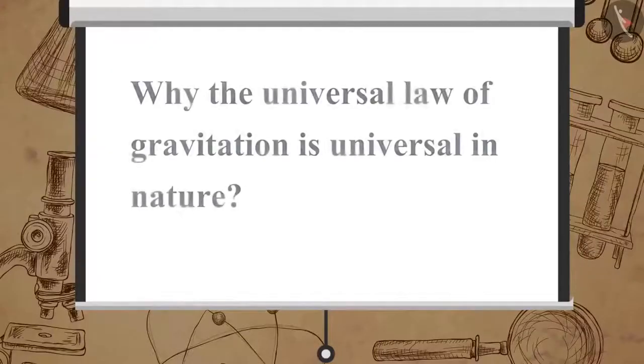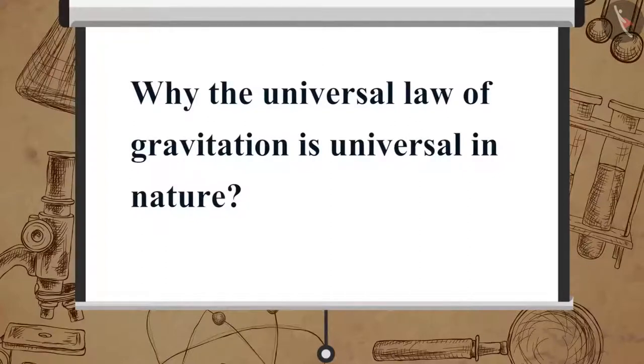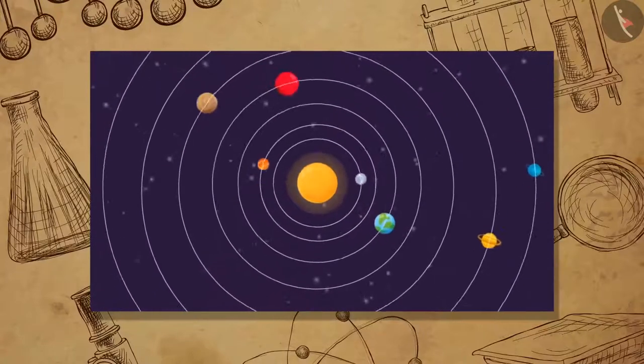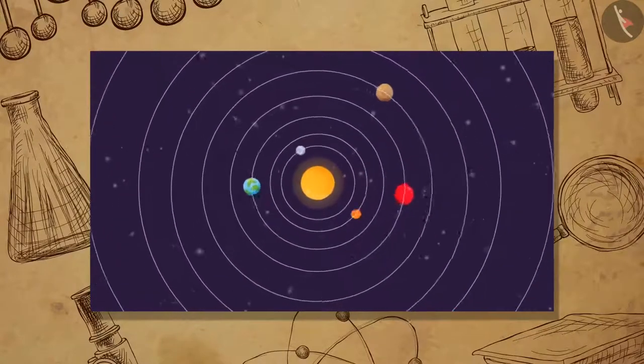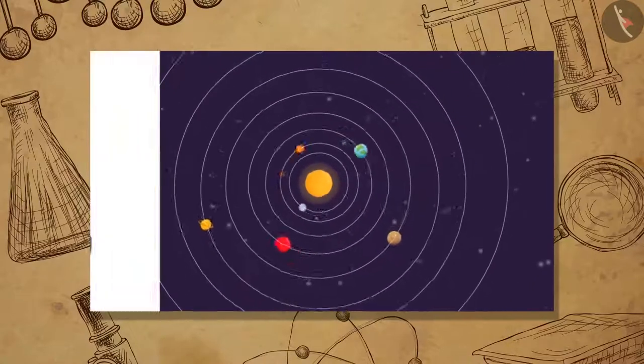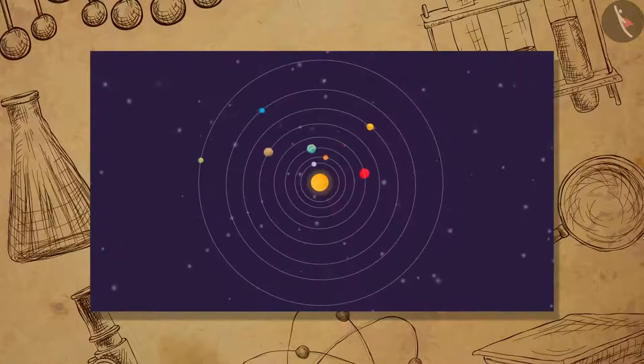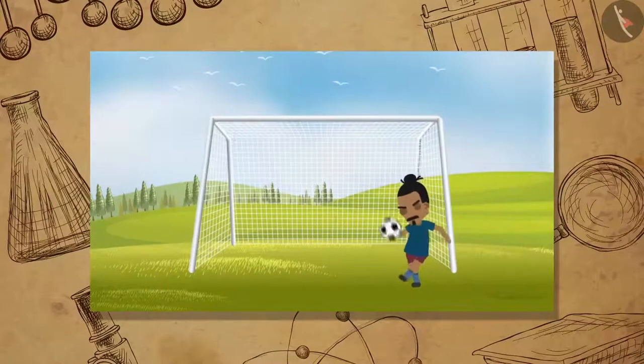Now, can you tell why the universal law of gravitation is universal in nature? It is because the law is applicable to all the bodies in the universe. Whether the bodies are big or small, whether terrestrial or celestial, the law applies to all.